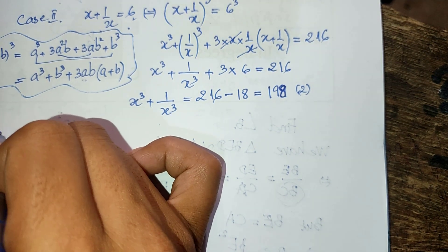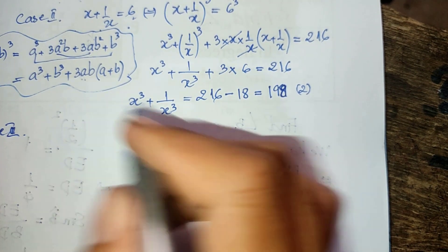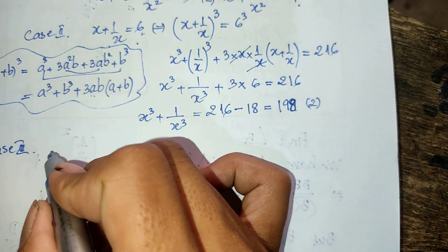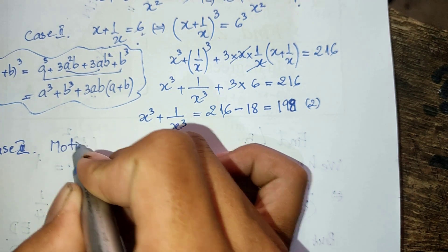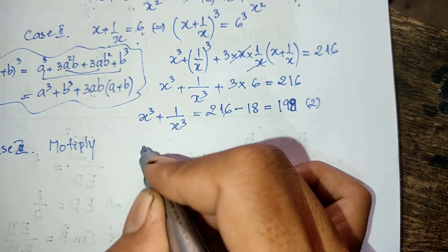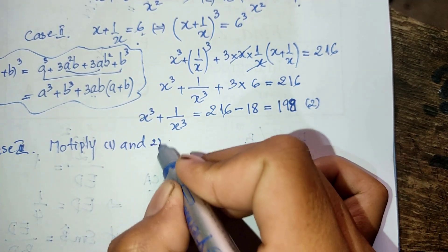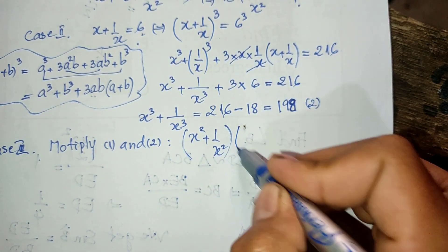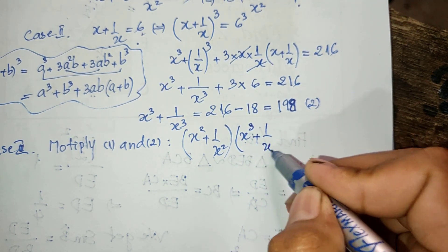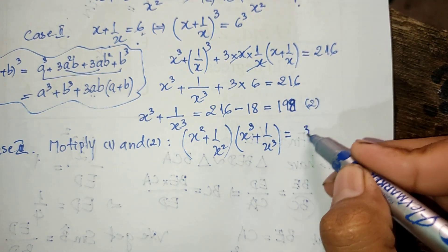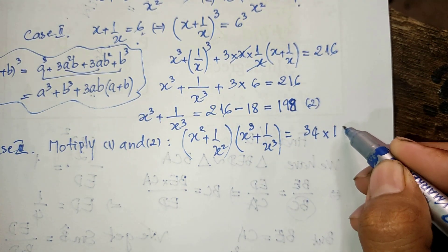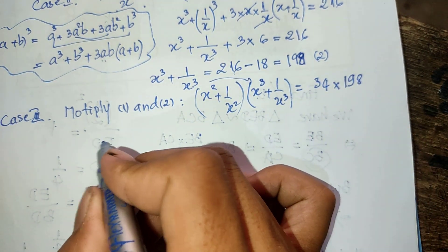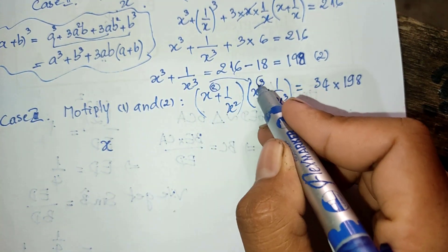Now case three: I take the first equation and the second equation and multiply them together. So we multiply h squared plus one divided by h squared by h cubed plus one divided by h cubed, which equals 34 times 198.